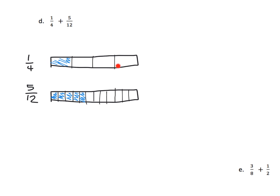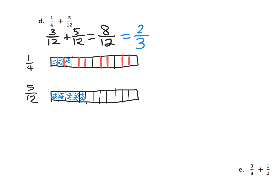Give your students some time. Eventually we want students to see that if we cut each fourth — I'll do this in red — each fourth into three pieces, we now have twelfths. So instead of having one-fourth, we now have three-twelfths. And the five-twelfths are still the same. Adding that together, we get eight-twelfths. If your students want, they can simplify by dividing both the numerator and denominator by a common number and get two-thirds, but at this point we're happy with eight-twelfths.